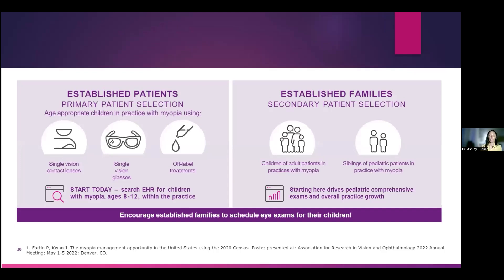Look for the ones wearing single vision contact lenses, single vision glasses, or off-label treatments. But the ones I really like talking to are the parents — we as parents absolutely love talking about our kids. Ask them about their kids, ask if they have kids, ask if their kids have been seen by an eye doctor. We all know myopic parents make myopic children. If you have a myopic mom or dad in your chair, they could potentially have a future myope. You want to be the one that sets the stage to care for that child and try to prevent them from becoming as myopic as the parent in your chair.